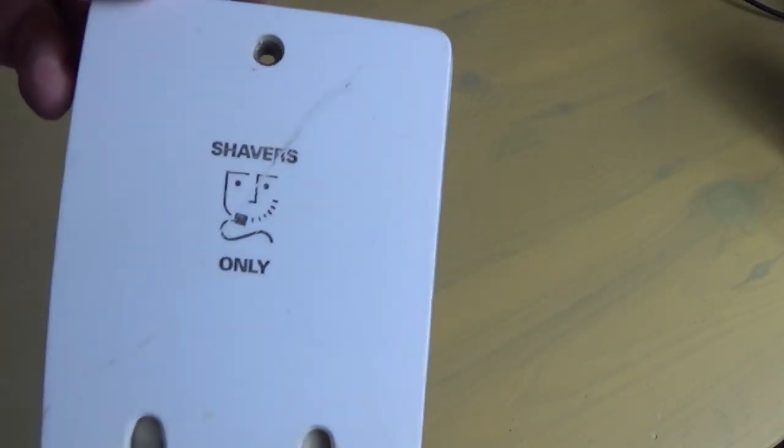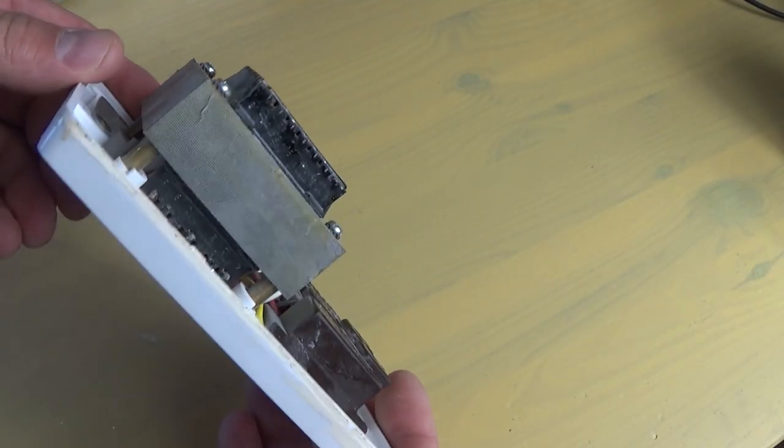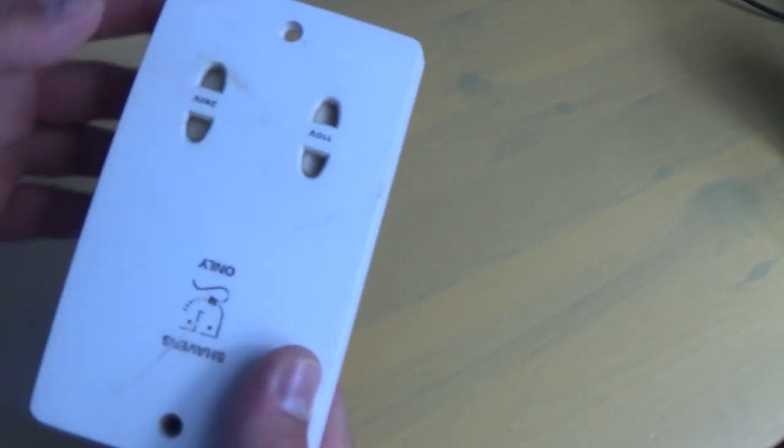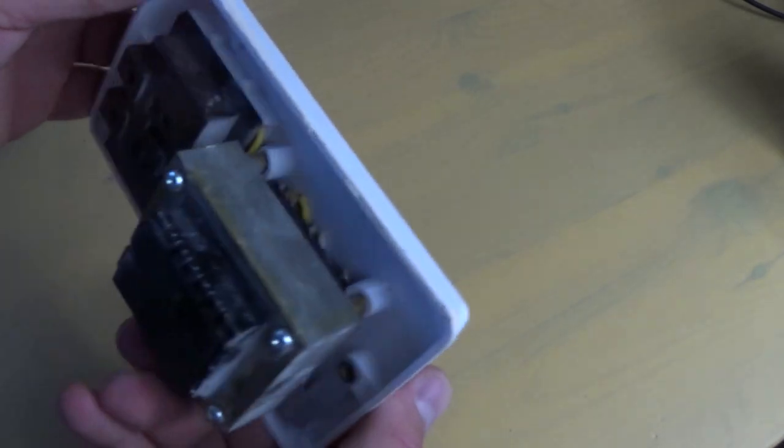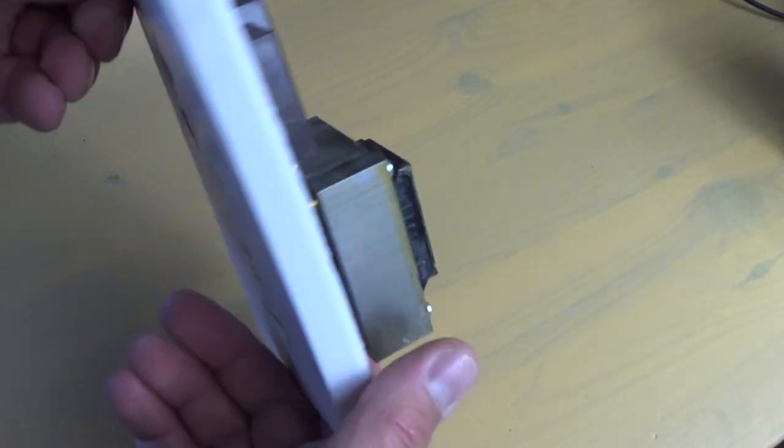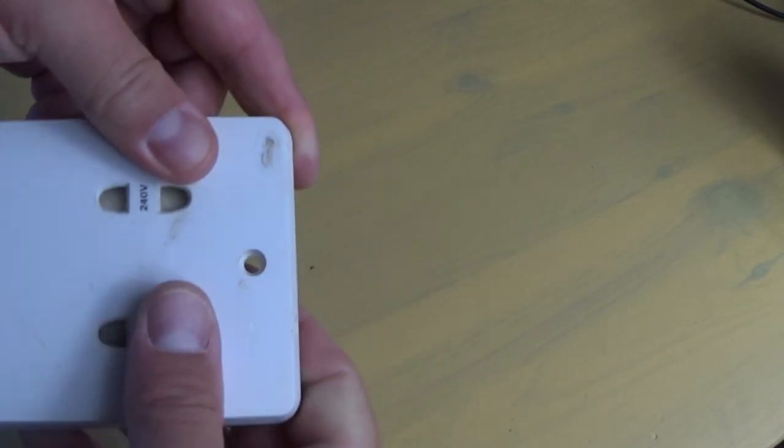The only allowable socket that can be closer to the bathtub is a shaver socket that has a double wound insulating transformer, so it means that the socket is electrically separated from the earth. So in this video I'm going to show you two ways of wiring the shaver socket.